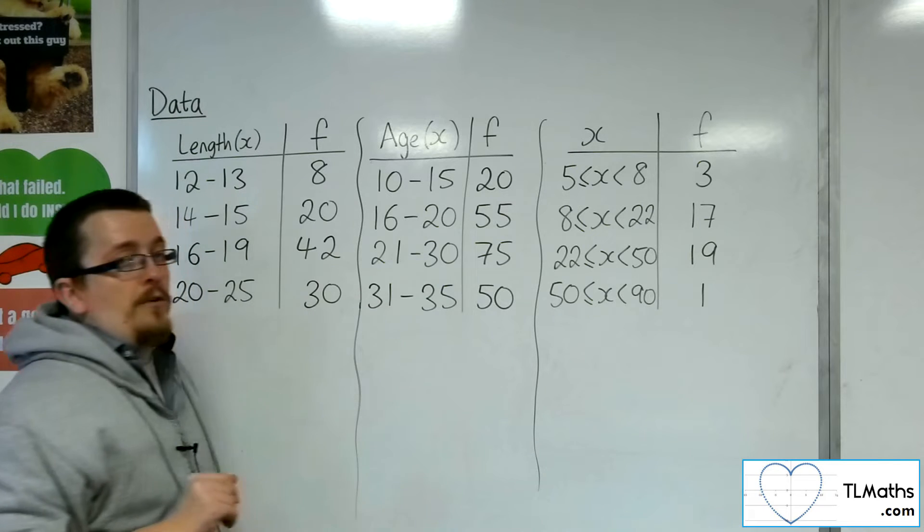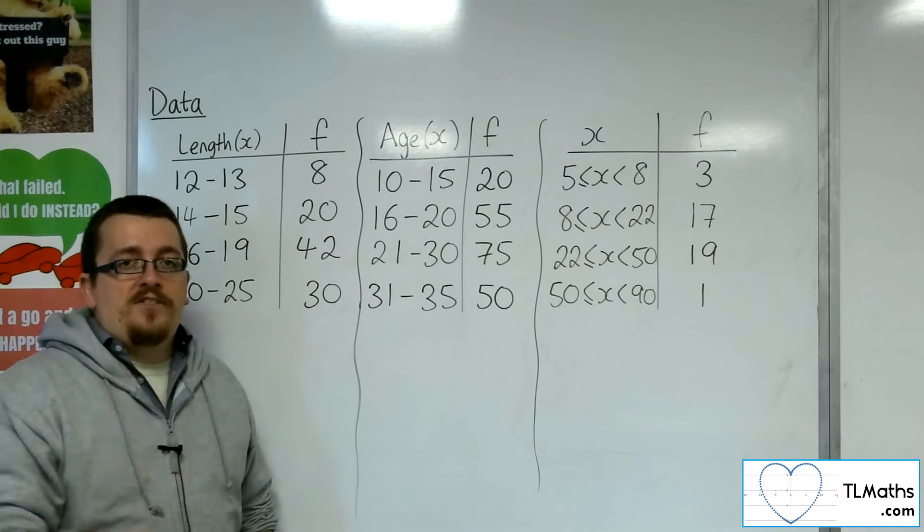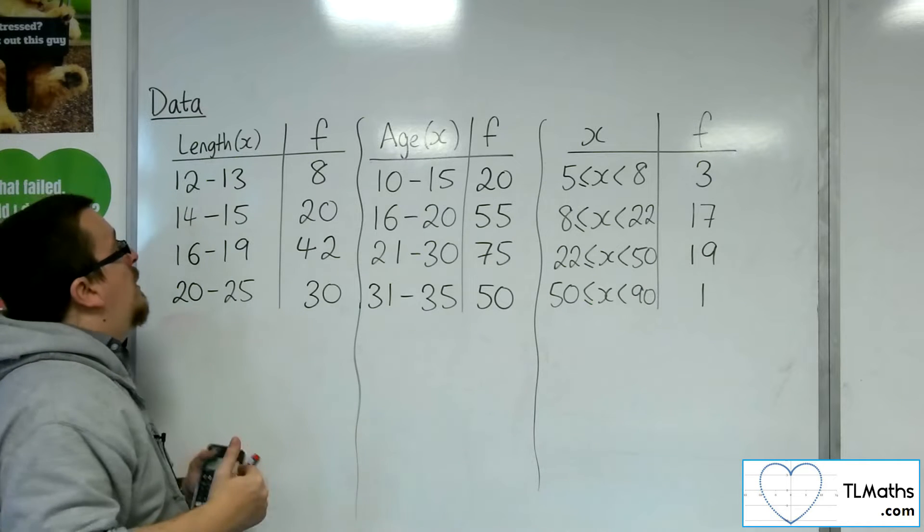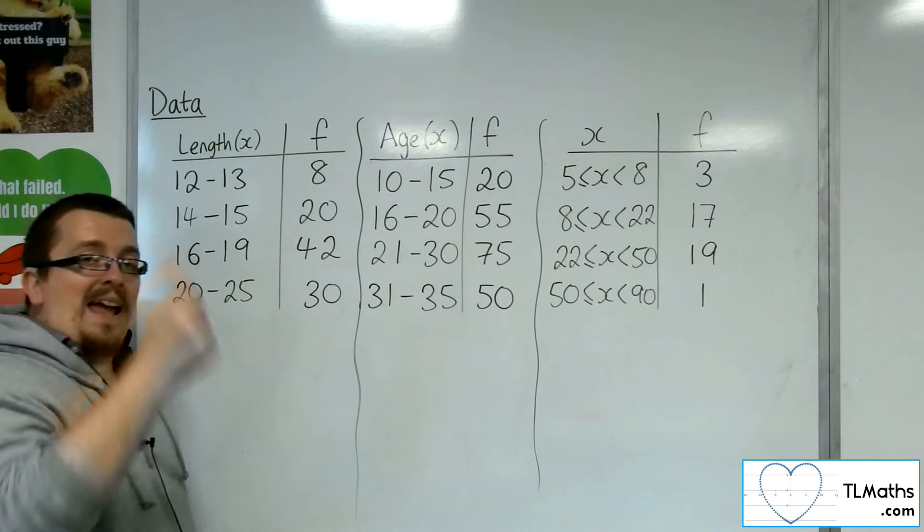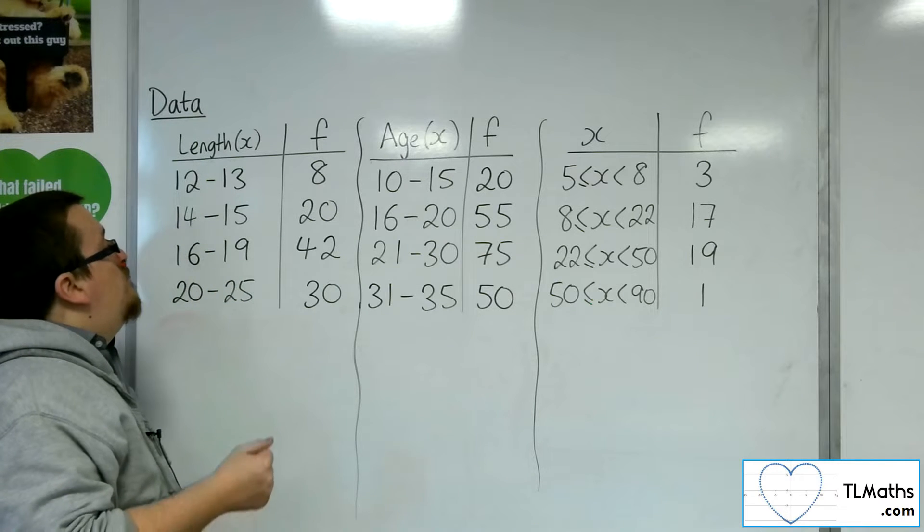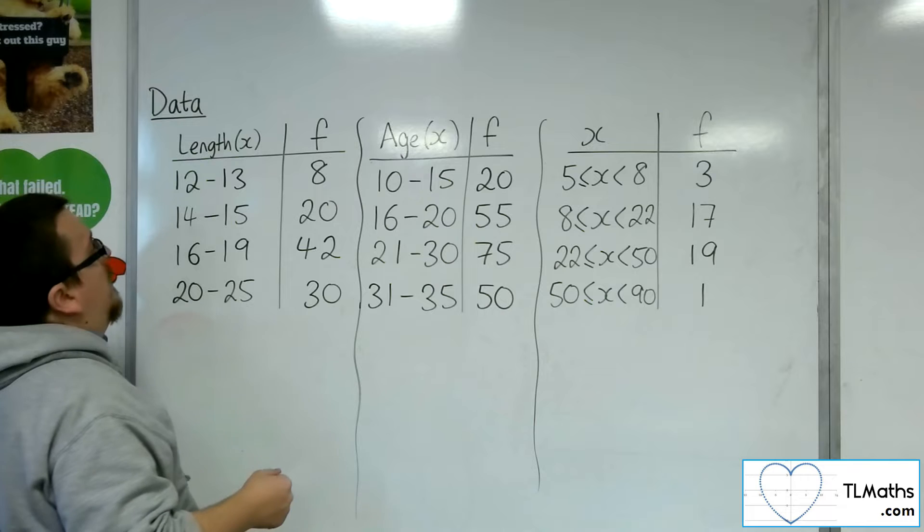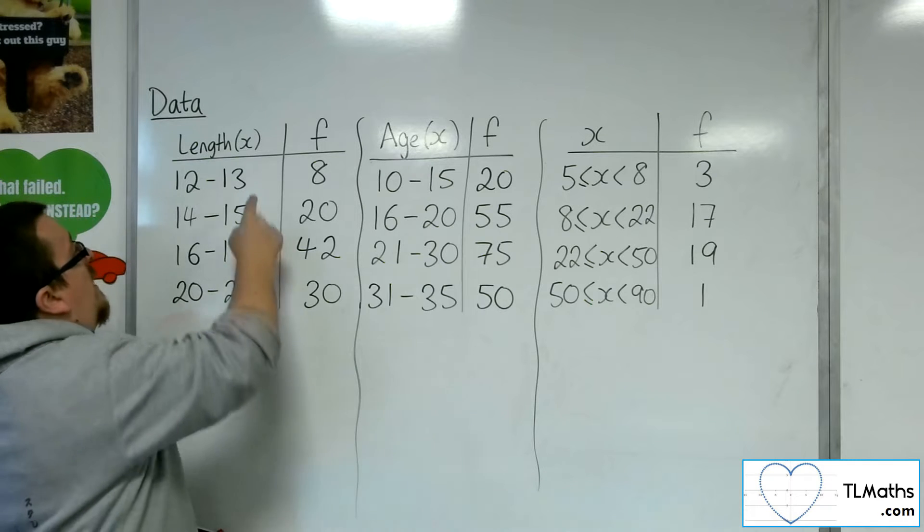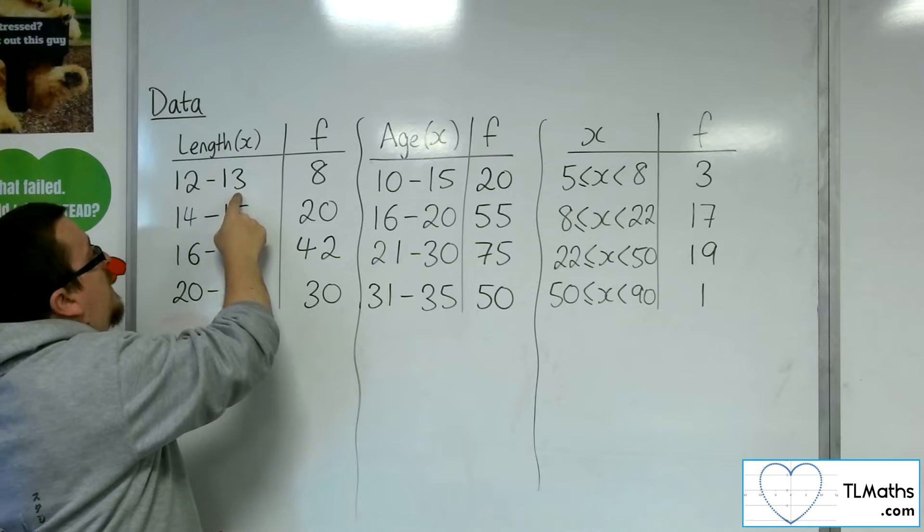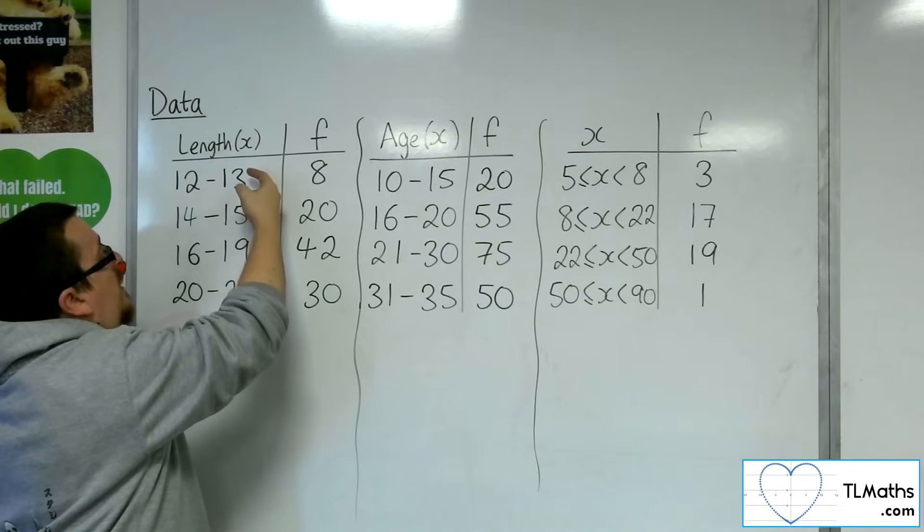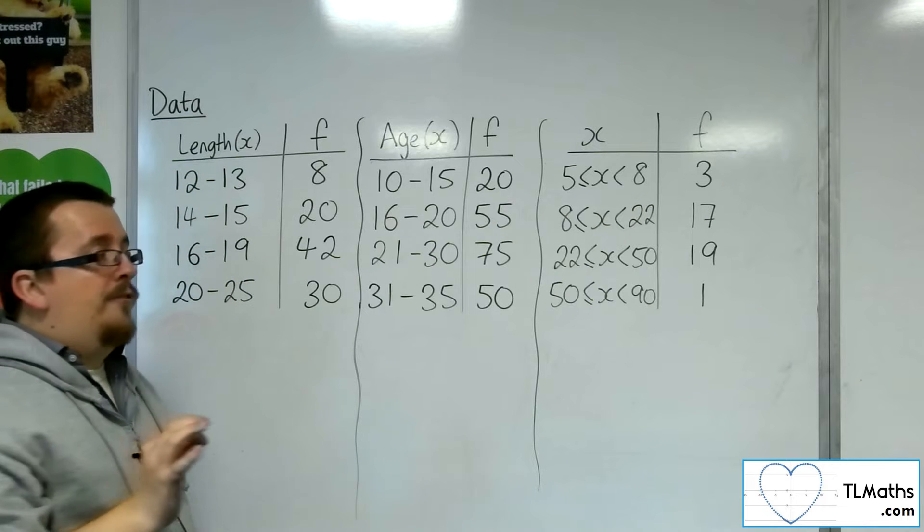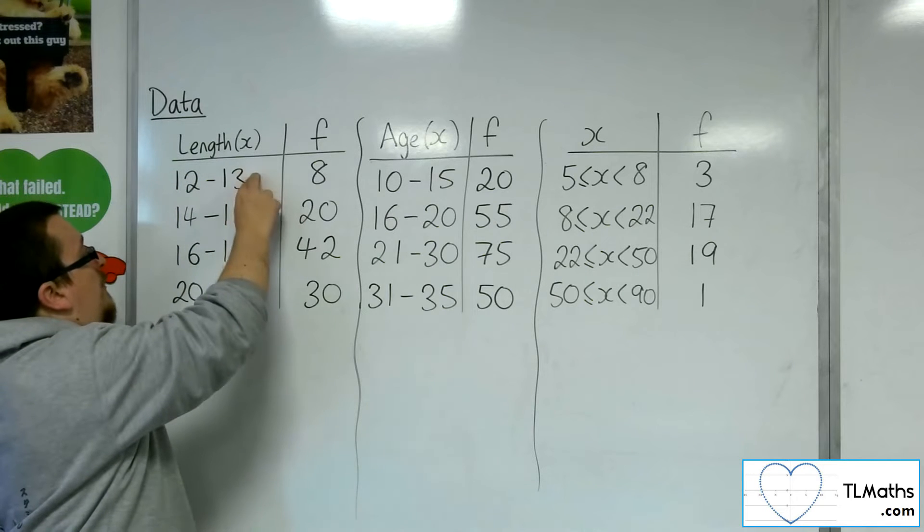The first two look very similar but there is a subtle difference which I will explain. Let's have a look at this first one. Here the x's are representing lengths and these would be rounded to the nearest whole number. I know that anything that is between 11.5 to 13.5 would go into this grouping. If it was exactly 11.5 it would be rounded up to 12, goes in this group.